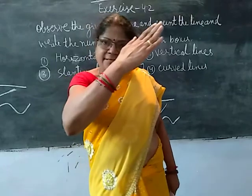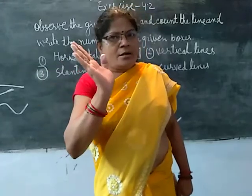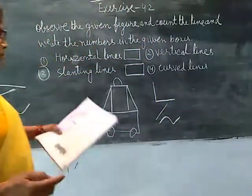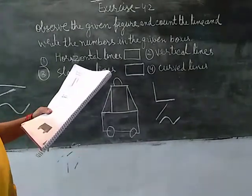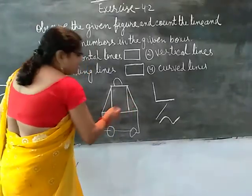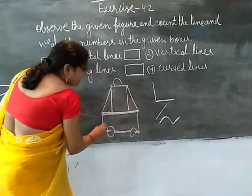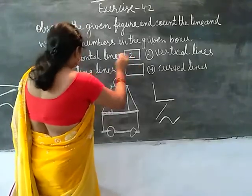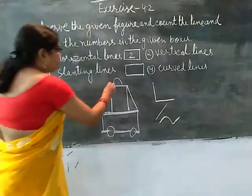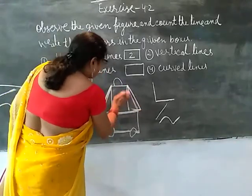The slanting line is like this — slanting. And the curve line is the curve. Now look at this book and the paper. First you can see the horizontal line, like this. The slanting line means the slanting line. This is one and two. This is the horizontal line. Next is the slanting line — this is one and two. This is the slanting line. Do you understand?